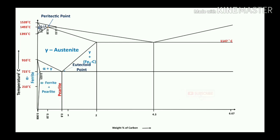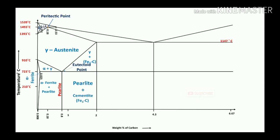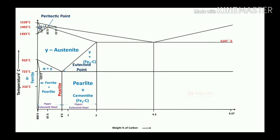At 0.8% carbon, or eutectoid steel, it only forms a pearlite structure. Before 0.8% it is alpha ferrite plus pearlite, and after 0.8% it is pearlite plus cementite (Fe₃C). Up to 0.8% carbon is represented as hypo-eutectoid steel, and from 0.8% to 2% is hyper-eutectoid steel.